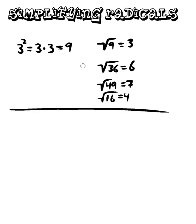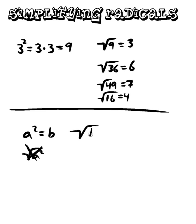Now what we're going to do is see what that looks like and how it works. You can generalize this by saying: if a squared equals b, then the square root of b is equal to a. So for example, 3 squared is b, which equals 9, and the square root of 9 is 3. That's just the rule, basically.